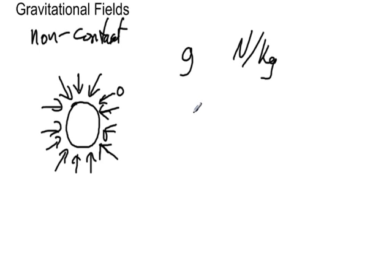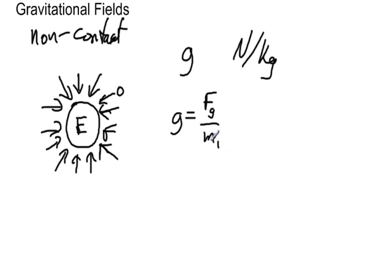There are two ways we talk about gravitational fields: in terms of the object experiencing the field, or the object producing the field, like the earth. For the object experiencing the field, the gravitational field strength is the gravitational force it's experiencing divided by the mass of that object — we'll call that M1. The force is in newtons, mass is in kilograms, so the units work out. The gravitational field strength equals force over mass, which looks just like our gravitational force equation F = mg.